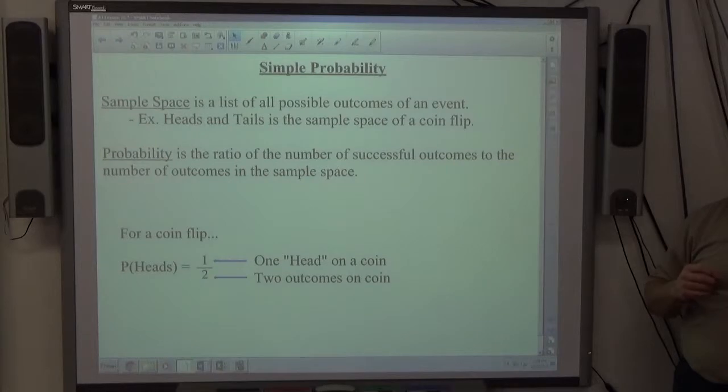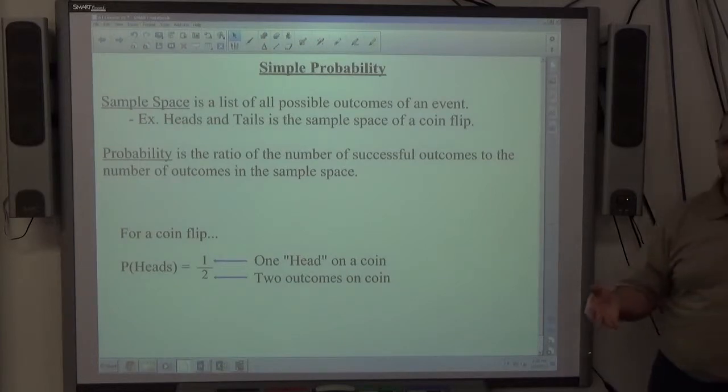For rolling a six-sided die, the sample space is 1, 2, 3, 4, 5, 6. If it's the alphabet, the sample space is the alphabet. There's 26 members of the sample set. So every outcome possibility is in the sample set. Sample space.